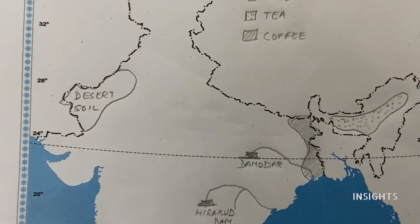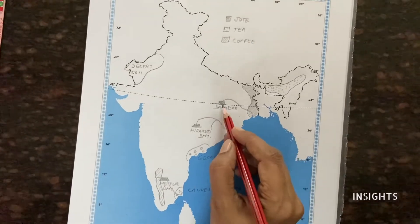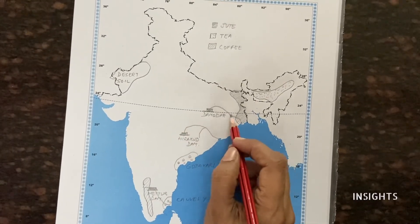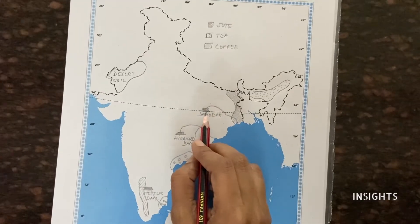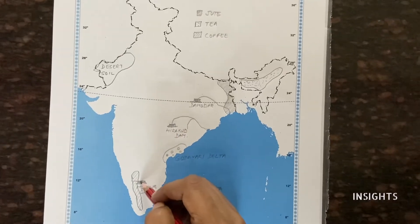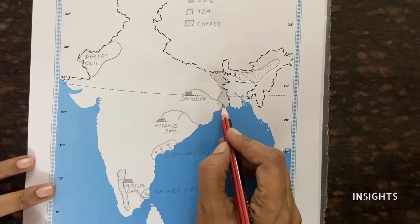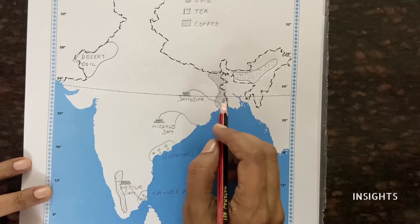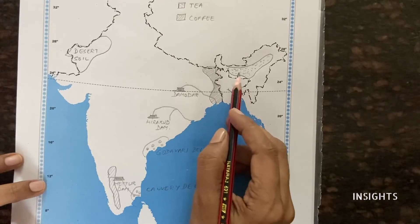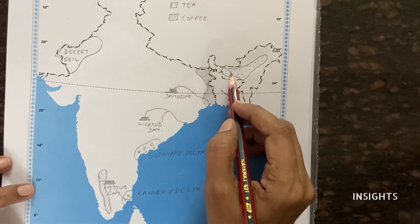Let's have a recap now. The first thing we had to do was mark the dams. Instead of just marking the dams, we also drew the rivers — River Damodar with Damodar Dam, River Mahanadi with Hirakud Dam, and River Kaveri with Mettur Dam. Then we marked jute cultivation, which is found only in West Bengal.